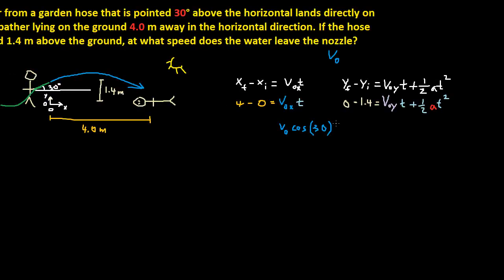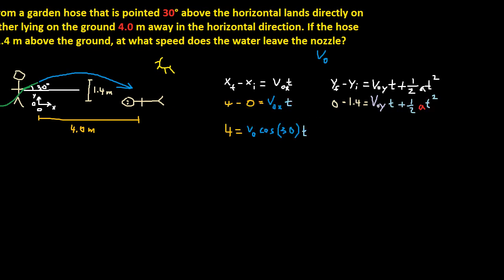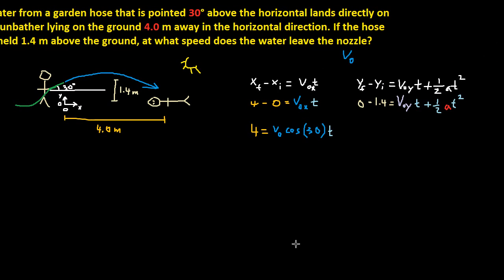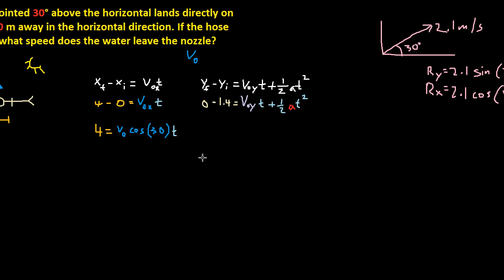And for V0y, if V0y equals V0 sine 30, then negative 1.4 equals V0 sine 30 times T.